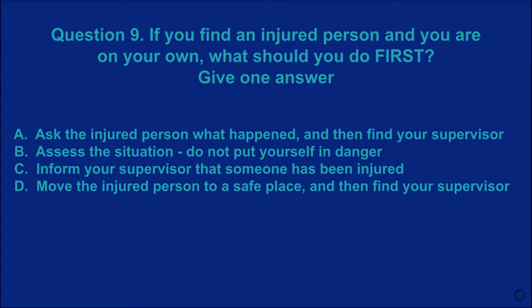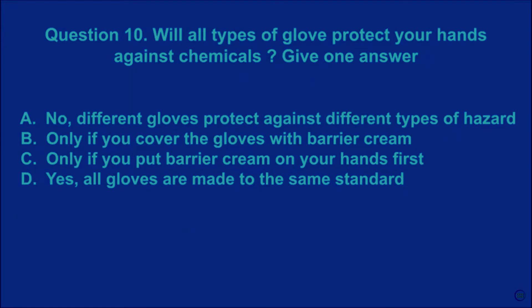Question 9: If you find an injured person and you are on your own, what should you do first? Give one answer. A: ask the injured person what happened and then find your supervisor. B: assess the situation and do not put yourself in danger. C: inform your supervisor that someone has been injured. D: move the injured person to a safe place and then find your supervisor. The correct answer is B.